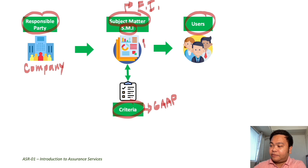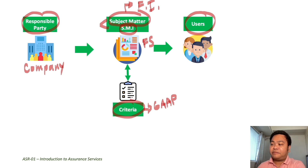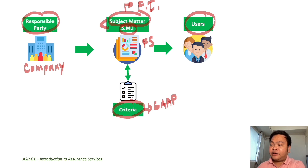They will prepare a report to be issued to the users — for example, the financial statements. The financial statements are the subject matter information, which is the outcome of the evaluation or measurement of the subject matter against the criteria. Take note of the difference: the subject matter is the source of the information, such as the financial information, while the subject matter information is the report about that information after it has been measured or evaluated against the criteria. In this example, it is the responsible party or the company who prepares the subject matter information like financial statements.